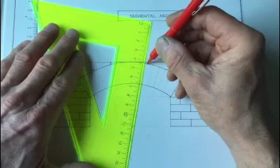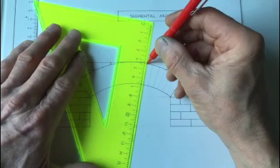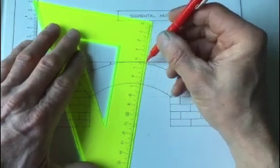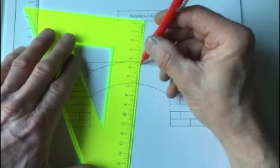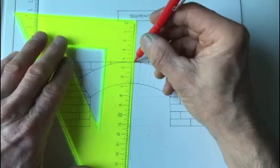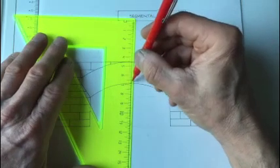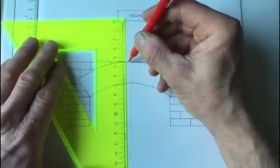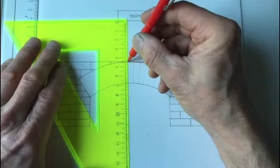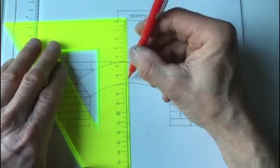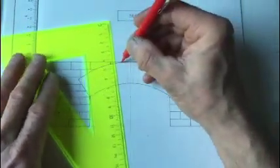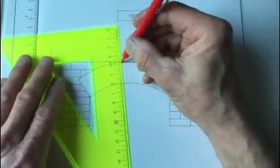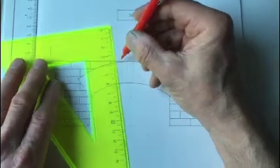So once we've gone through these, then obviously the principles of the setting out, we just simply take to a bench with a piece of ply, and everything that we're doing here we just replicate on ply. And then obviously that ply then becomes our arch center or turning piece, depending on how big it is.